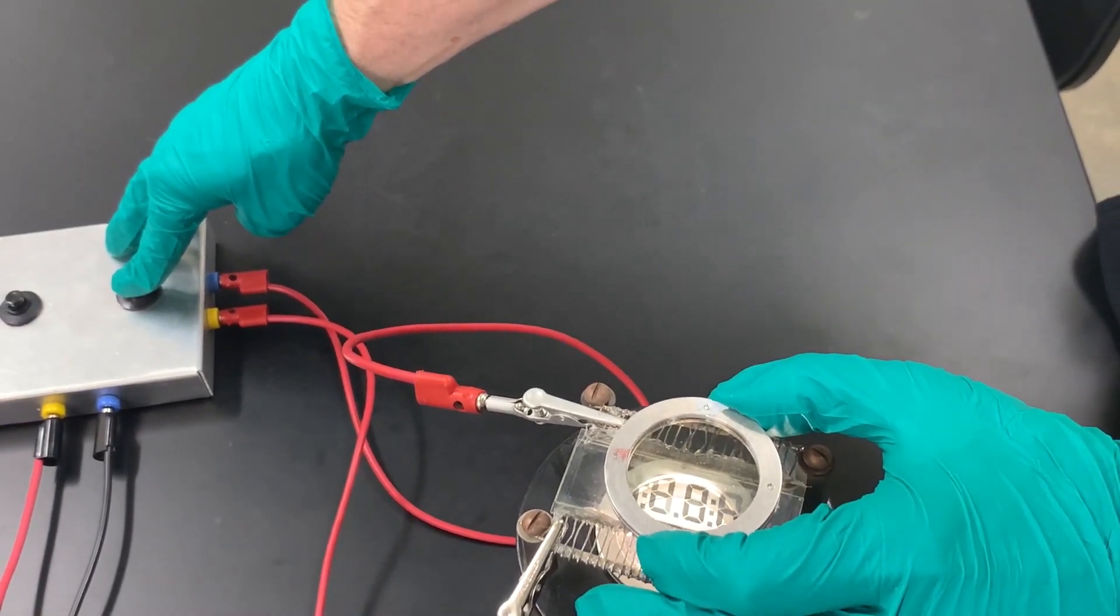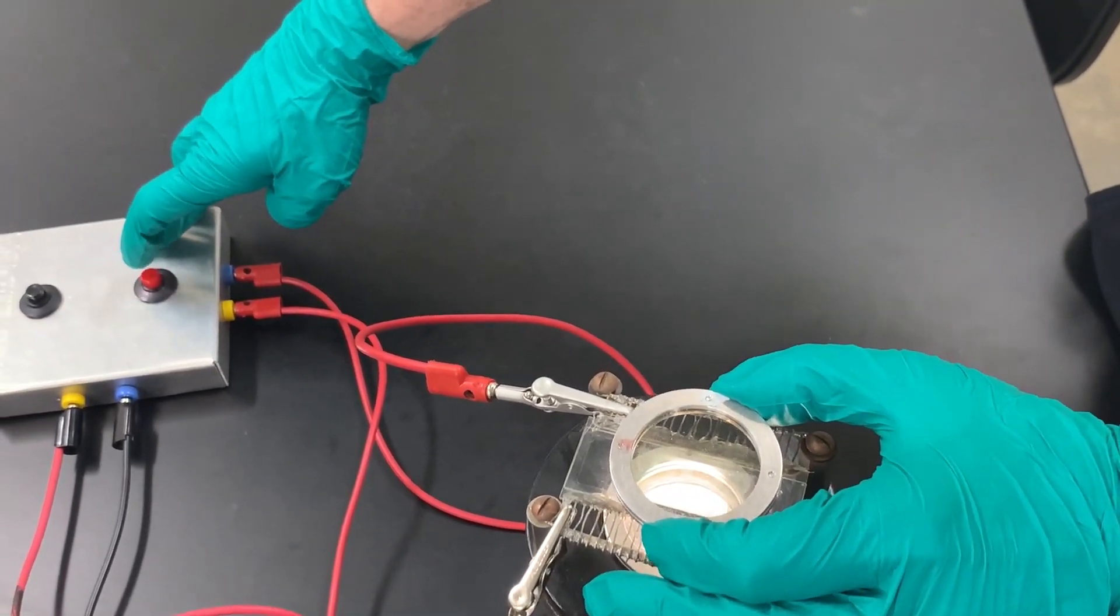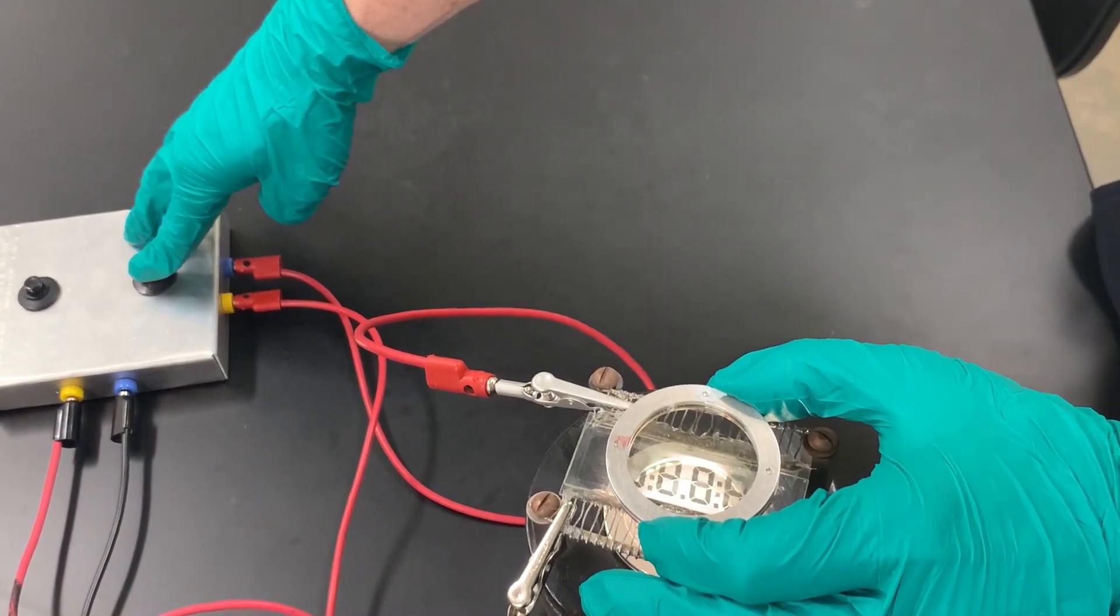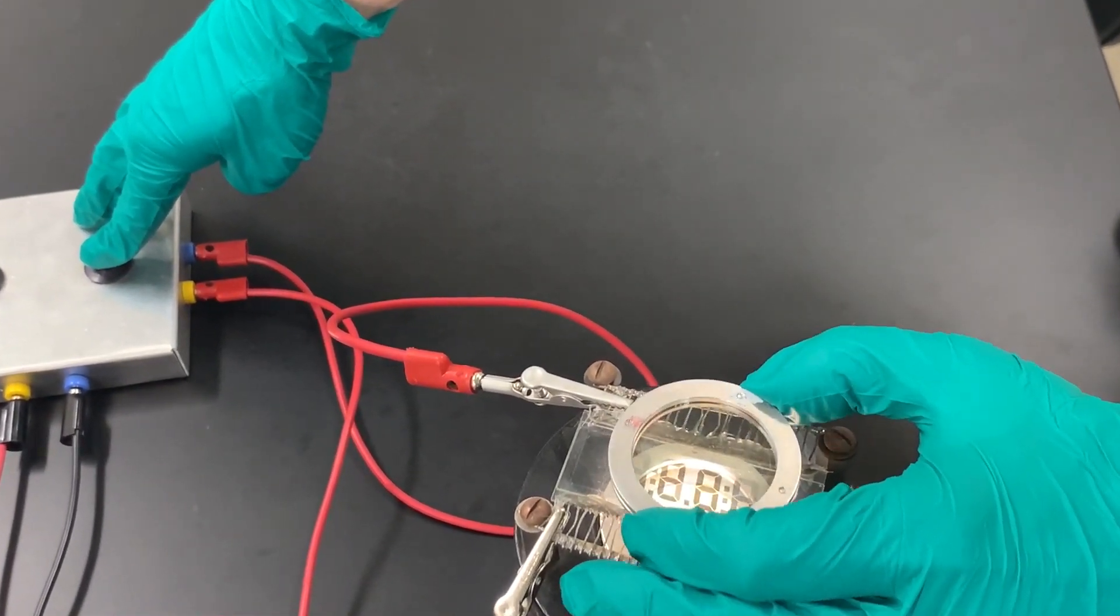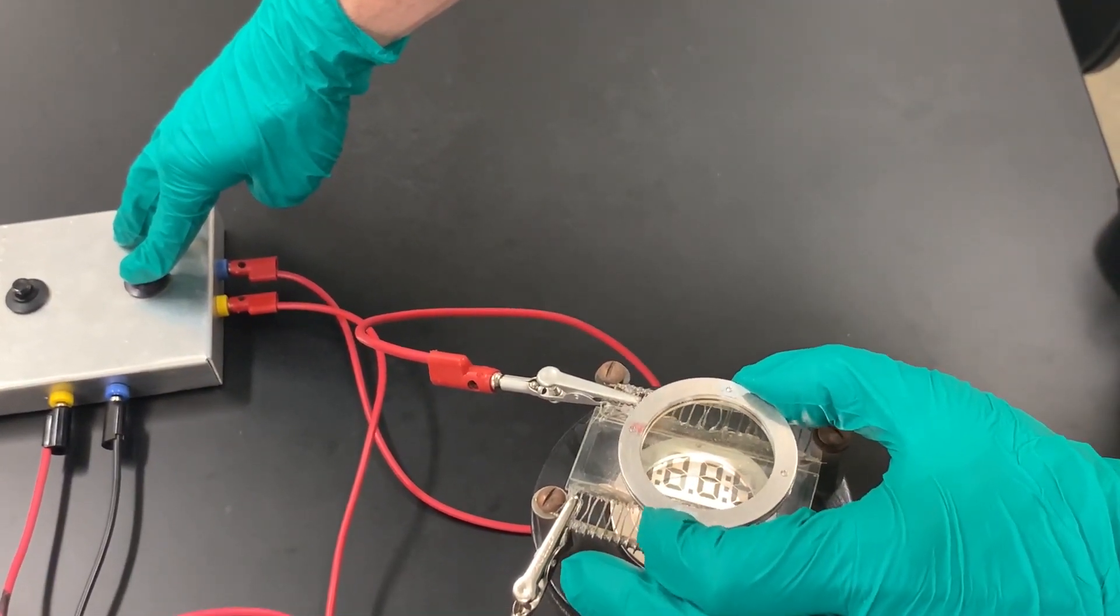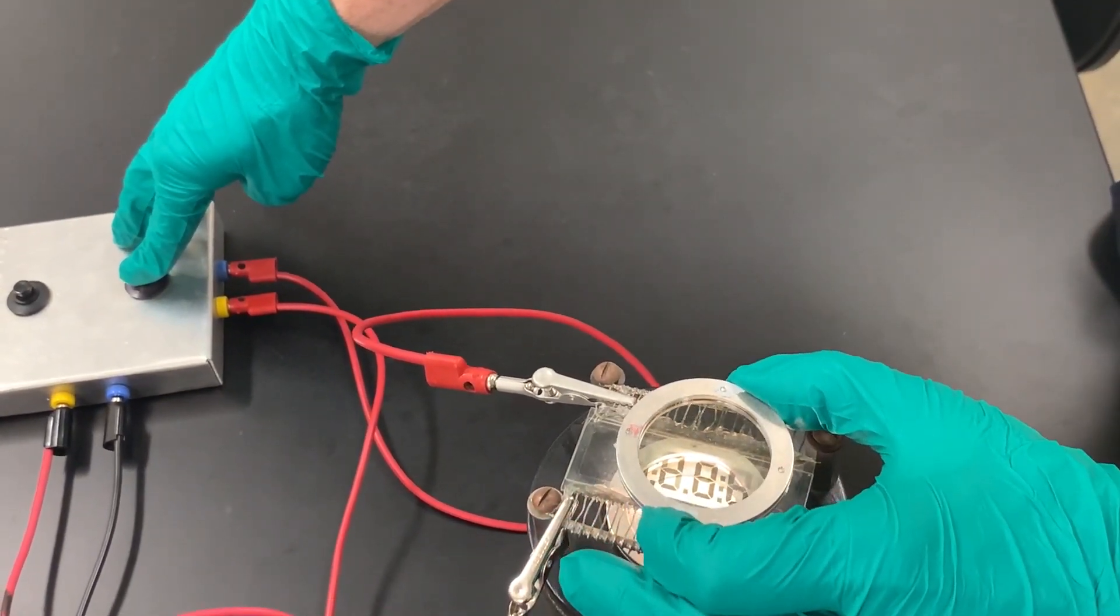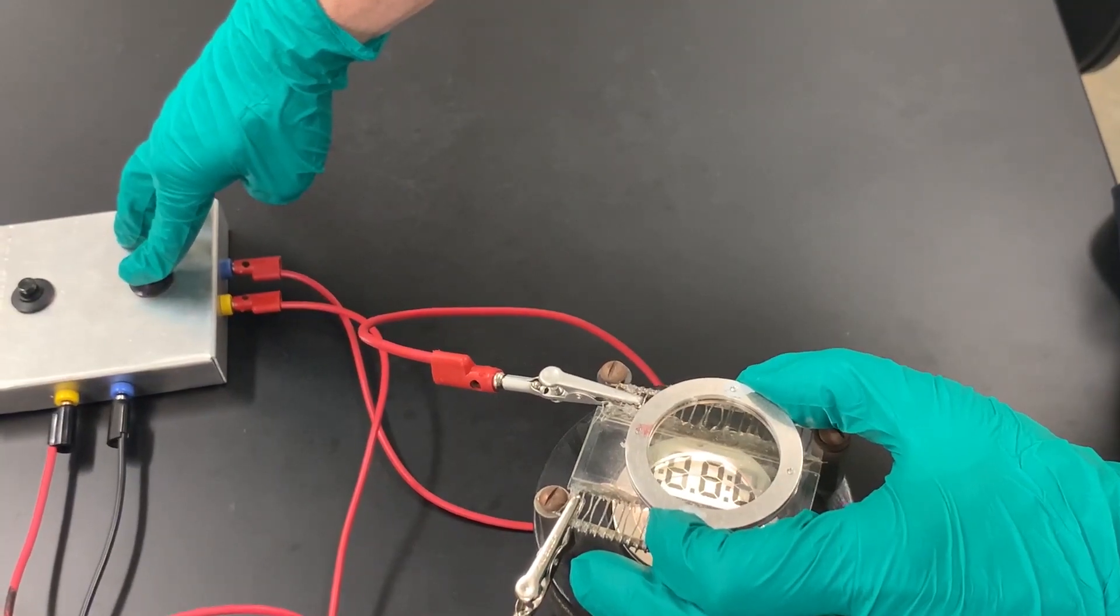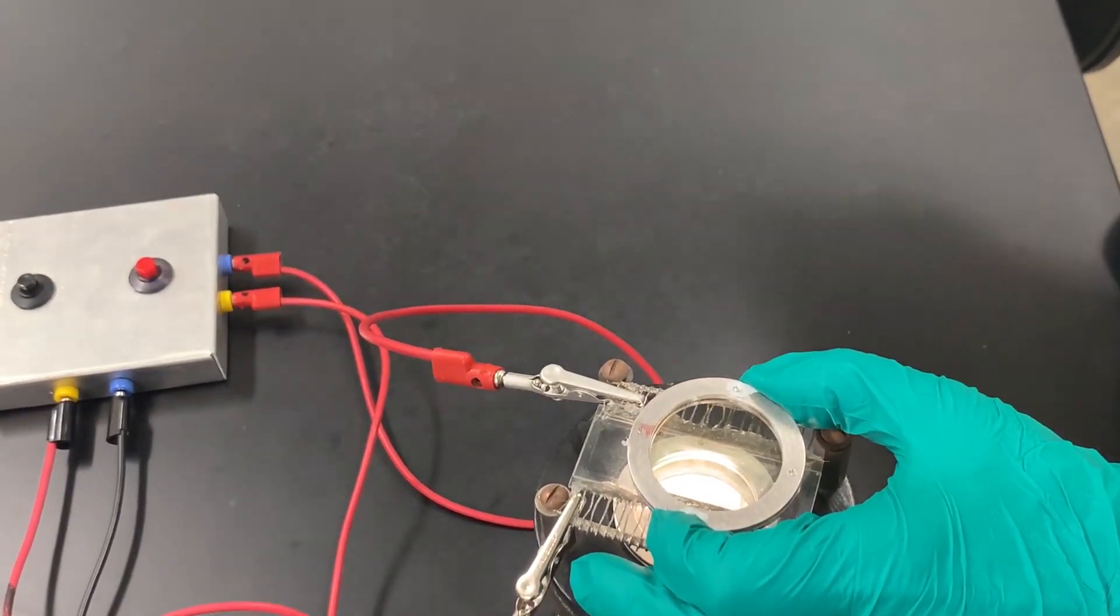I can actually reorient the molecules inside so it doesn't rotate the polarization. In the places where those electrodes reorient the molecules, I now don't get light through. I have to have the polarizers crossed to be able to see the display, and I have to put on the electric field to go from clear to dark.